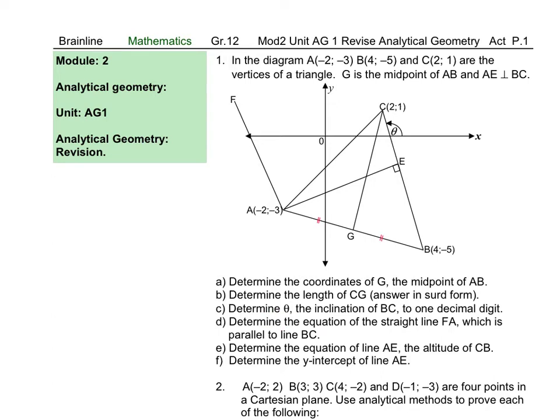Question C: determine theta, the inclination of BC, to one decimal digit, so we will say that tan theta is equal to the gradient of CB. Question D: determine the equation of the straight line FA, which is parallel to line BC, so we will use this gradient for the parallel line.